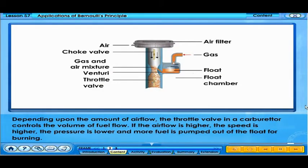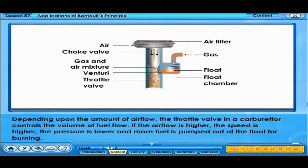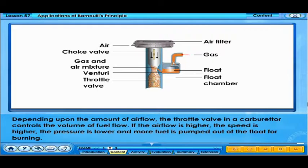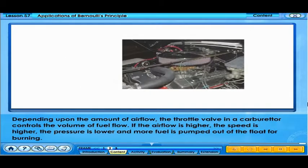Depending upon the amount of air flow, the throttle valve in a carburetor controls the volume of fuel flow. If the air flow is higher, the speed is higher, the pressure is lower, and more fuel is pumped out of the float for burning.